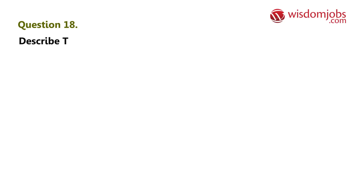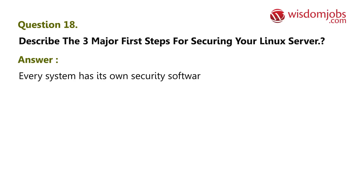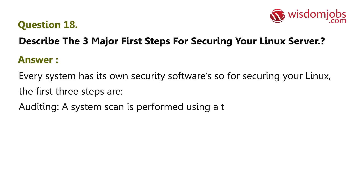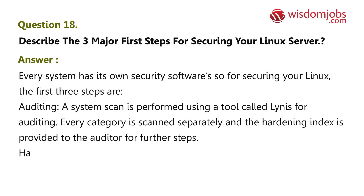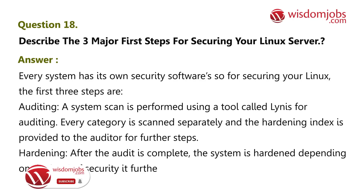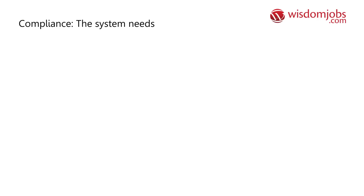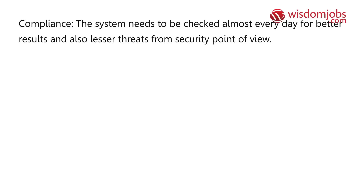Question eighteen: describe the three major first steps for securing your Linux server. Answer: every system has its own security software. For securing Linux, the first three steps are: auditing — a system scan is performed using a tool called Lynis, where every category is scanned separately and a hardening index is provided; hardening — after the audit, the system is hardened depending on the level of security needed; compliance — the system needs to be checked almost every day for better results and fewer security threats.